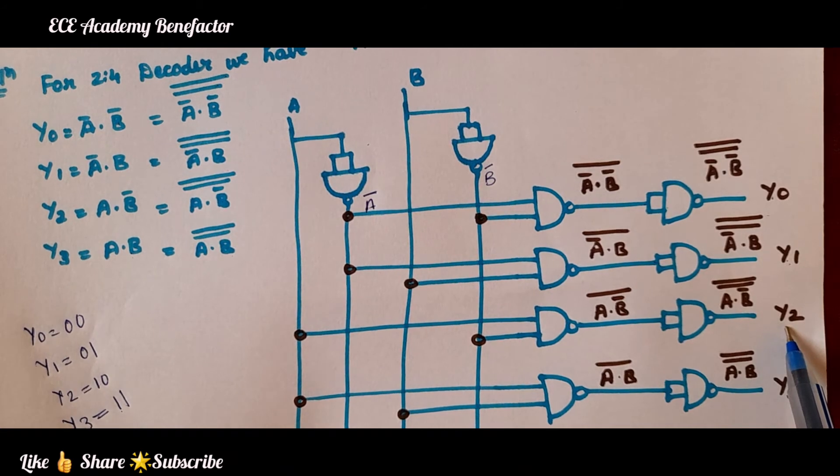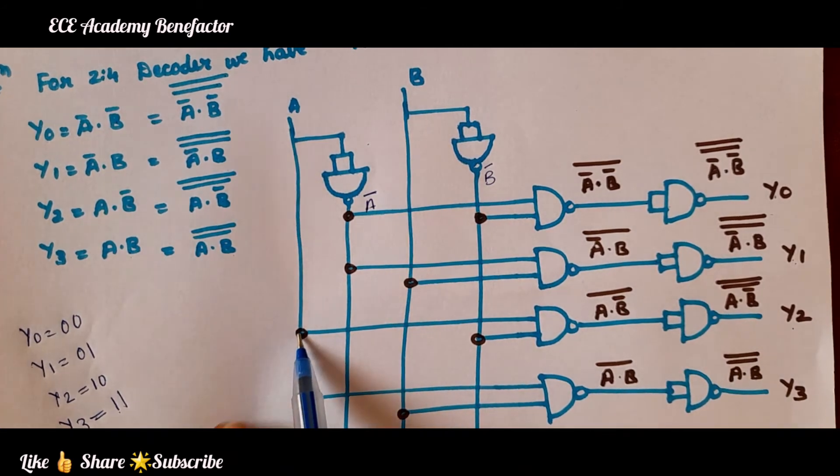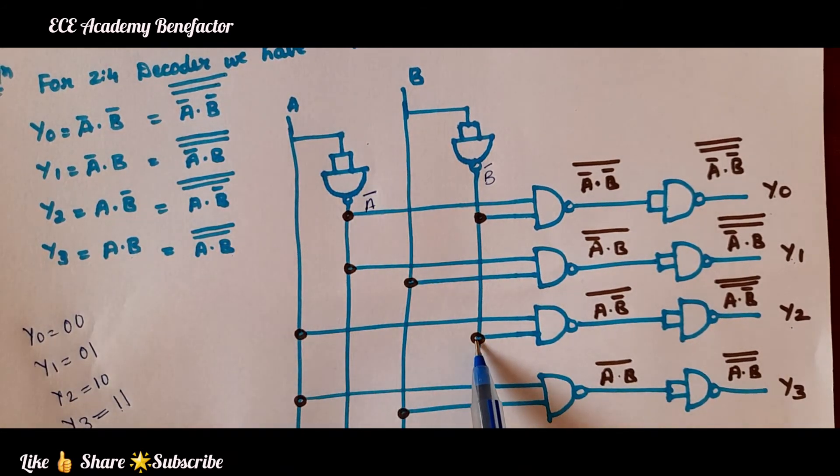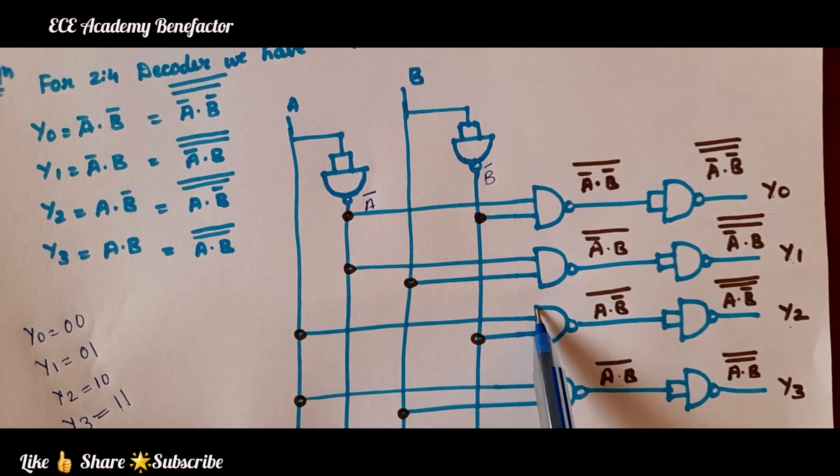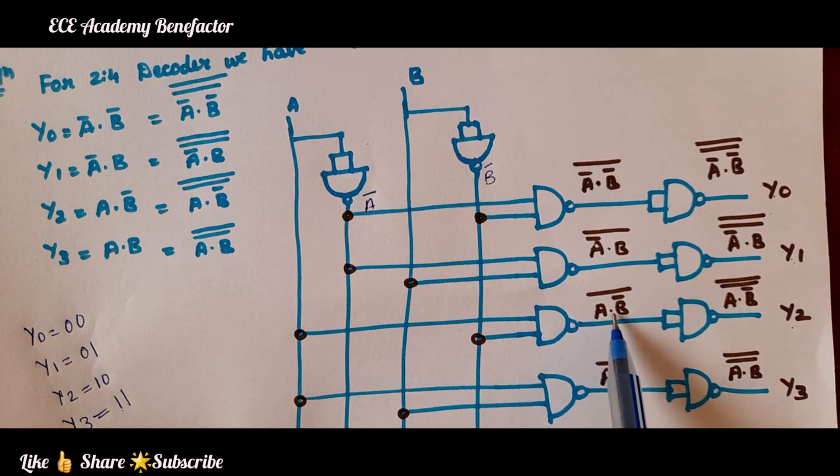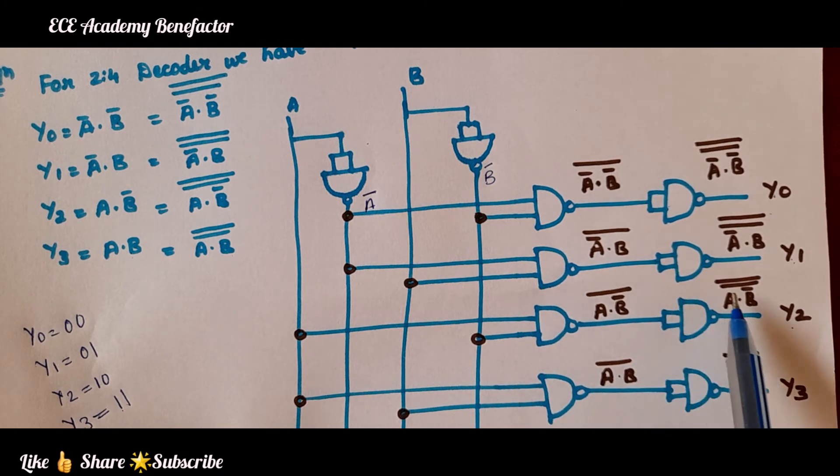Now, for getting y2 we connect it to A and B̅. A·B̅ is given to a NAND gate. It becomes A·B̅ the whole bar and it is again passed through a NAND gate to get double bar, A·B̅ double bar.